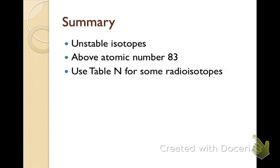So radioactive isotopes are unstable. Elements above 83 all have radioactive isotopes, even though the ones below can also have some radioactive isotopes as well. And use Table N for some of your radioisotopes. Have a good day.